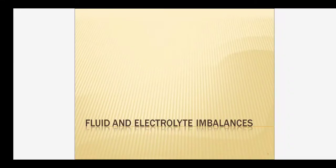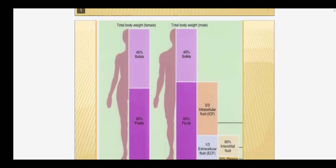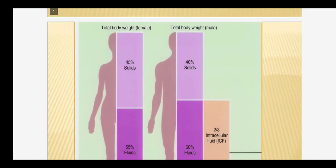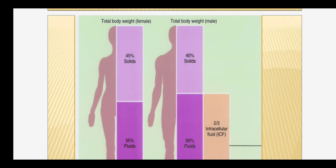Good morning class. The topic of today's lecture will be fluid and electrolyte imbalance. To start with the topic, first in the diagram we will see that the total body fluid according to the weight is 55% in female and 60% is in male. That means 60% of total body weight is made up of fluid, and in female around 55% of the body weight is made up of fluid.